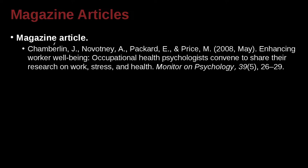Same kind of idea. We have the author — first author, second author, third author, fourth author — and before the last author we use an ampersand. Then here we have the year. Magazines and newspapers are issued by day, week, or month. So for example, this magazine may be monthly, so after a comma, put in the month: May.